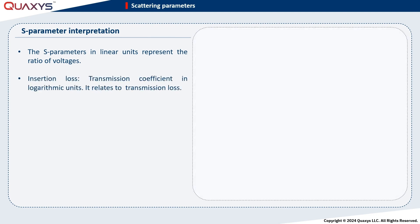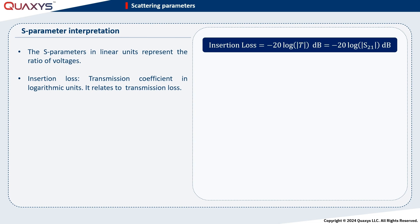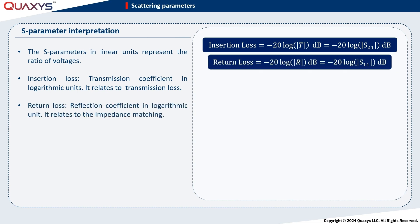Now, let's talk about the interpretation of S-parameters. The A and B parameters introduced earlier are voltages. Therefore, S-parameters, in linear units, represent the ratio of voltages. But we usually express S-parameters in logarithmic units. In this context, the transmission coefficient is called insertion loss, and the reflection coefficient is known as return loss. Remember, both insertion loss and return loss are positive numbers. It's desirable to have low insertion loss, meaning minimal losses and high return loss, suggesting effective matching or low reflections.